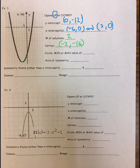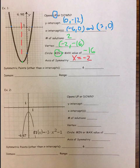And we have a minimum at that value of negative 16. Our axis of symmetry is equal to the x value of our vertex, which is negative 2. That's our axis of symmetry.